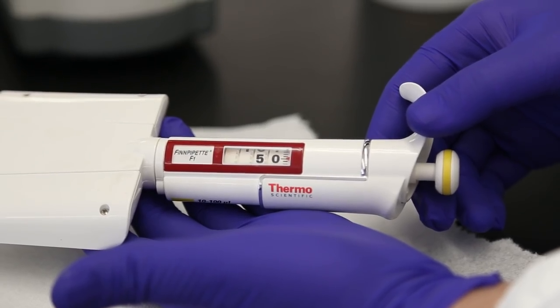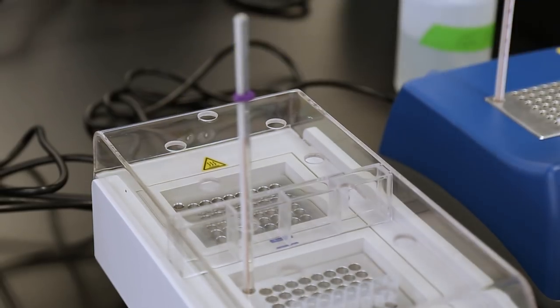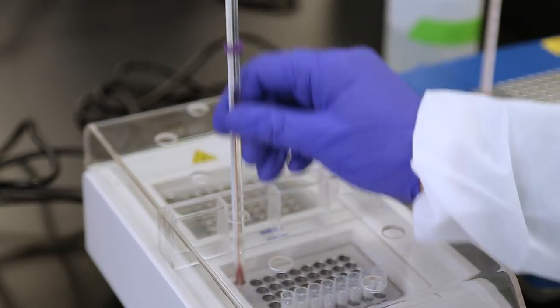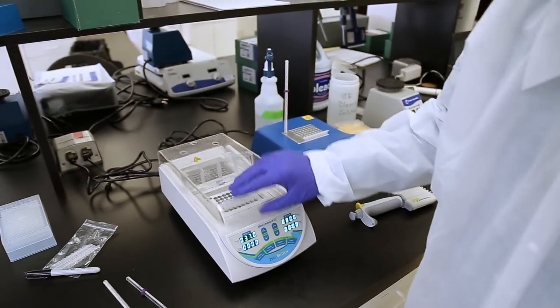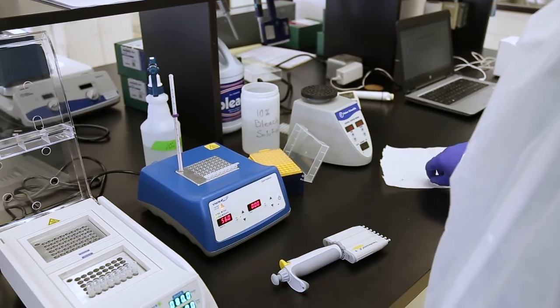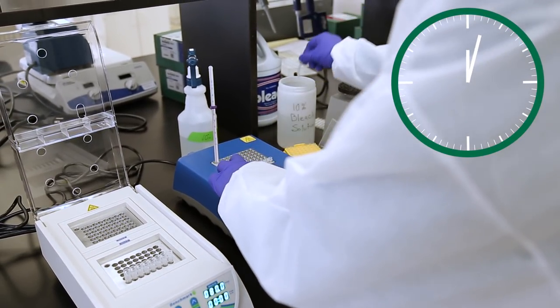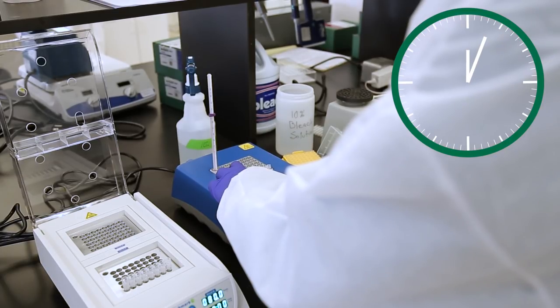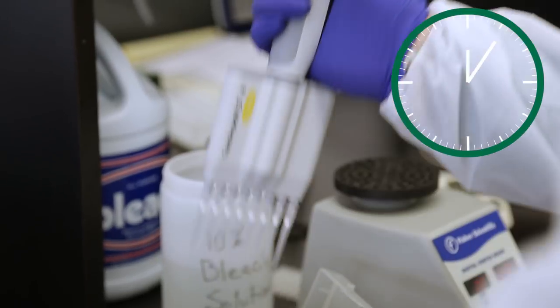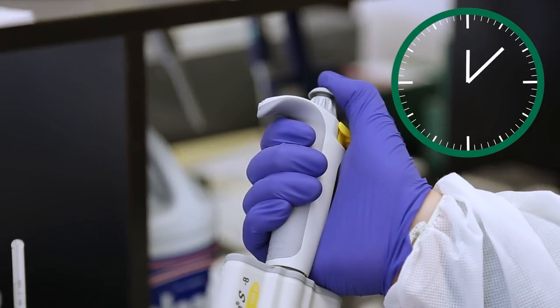With the 8 channel pipetter set to 50 microliters, remove the thermometers from the dual heat block and open the lid. With the reaction tubes still on the 56 degrees Celsius heater block, remove the caps from the reaction tubes. Place the used caps into the 10 percent bleach solution.